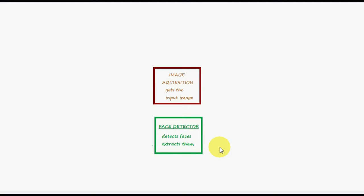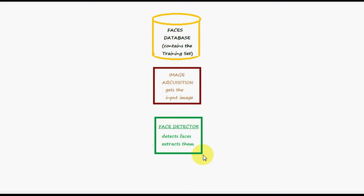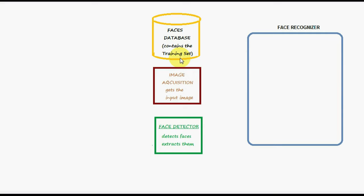Moving on to the next part. For face recognition, we need, first of all, a database of faces. This database is actually going to hold a training set — simply a set of faces of people that you want to recognize an unknown face against. In any face recognition algorithm, you first need a collection of faces. Naturally, the other bigger part is going to be the face recognizer component, which is going to recognize an input face. We'll look at its functionality in just a minute.